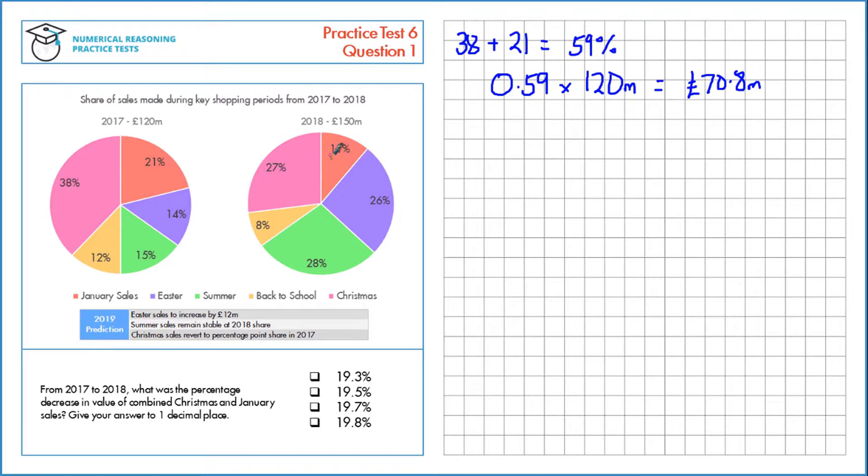Let's make the same calculation but for 2018. In 2018, we have 27% plus 11%, which is 38% total. 38% as a decimal is 0.38, and we multiply that by the total value to find the specific value that these two represent. That's 57 million pounds.